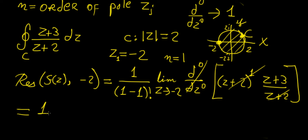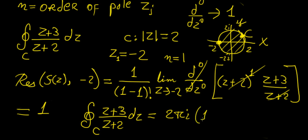So the value of that residue is just going to be 1. So now the value for the integral is going to be 2πi times the sum of all residues, but in this case we only have 1 residue, so that means this is going to be times 1, so this is just 2πi.